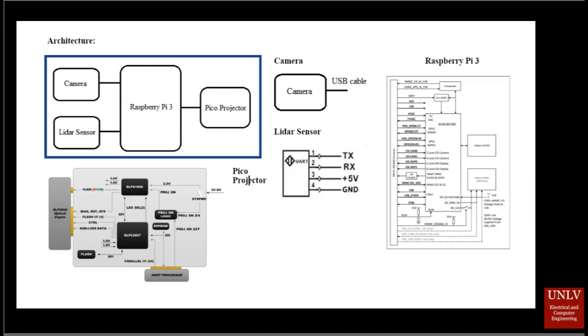Once the program deems that an object is close, an indicator signal is sent to a different program that makes an indicator light up or appear through the projector on the visor. This is where the Pico projector is used. The Pico projector takes video input from the Raspberry Pi and projects it onto the visor.